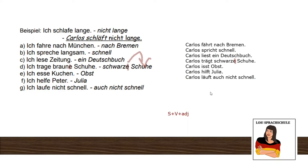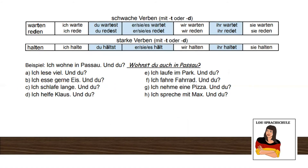Great — we move to the next little topic. We have schwache Verben — weak verbs — and starke Verben — strong verbs — and the focus here is verbs whose stem ends in t or d. The important part: if a verb stem ends in t or d, you also need to add an e for the 'you,' 'he/she/it,' and 'you plural' forms. You cannot skip it — it's bad for the tongue, it's painful.